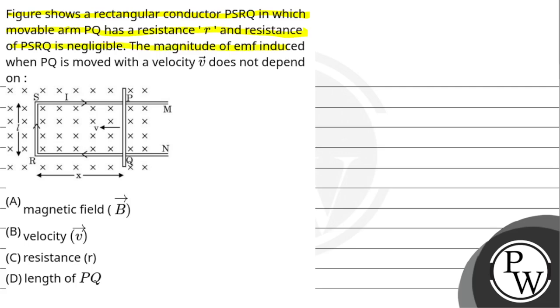The magnitude of EMF induced when PQ is moved with a velocity V does not depend on: option A, magnetic field B; option B, velocity V; option C, resistance R; option D, length of PQ.